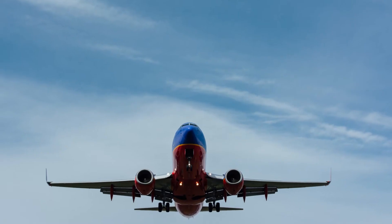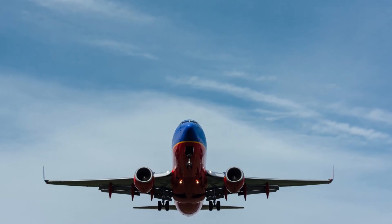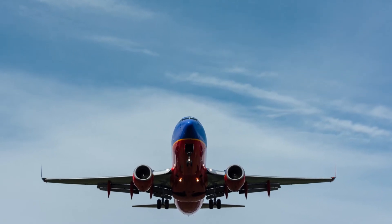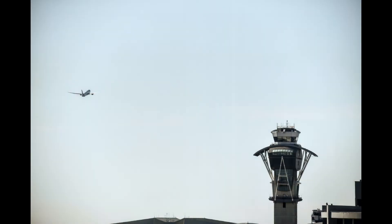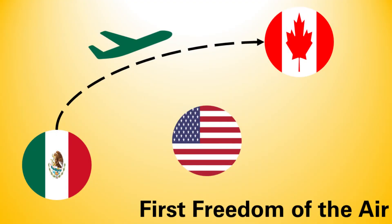The first freedom is the right to fly over the territory of another country. To do so, the airline must notify in advance, get approval, and possibly pay an overflight fee. So as an example, a Mexican airline flying from Mexico City to Toronto can fly over the US as long as they get clearance in advance.